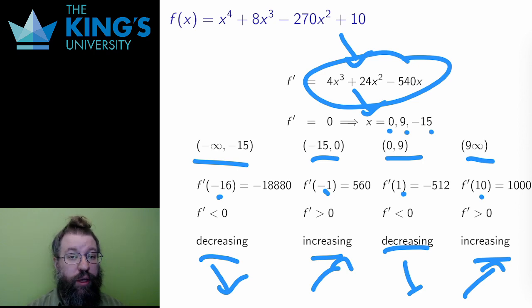There are two minima at negative 15 and 9, and a maximum at x equals 0.